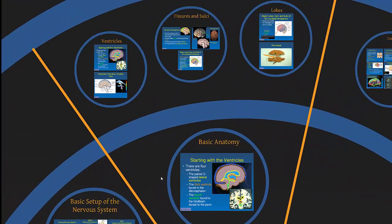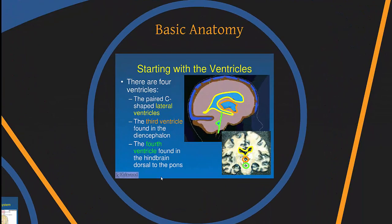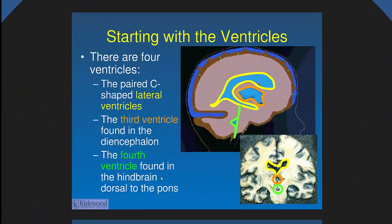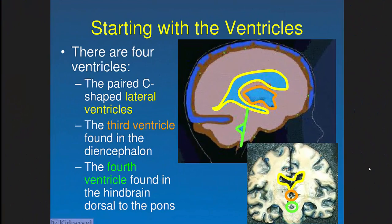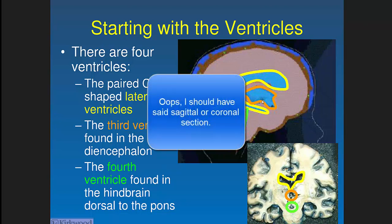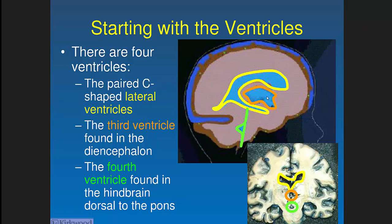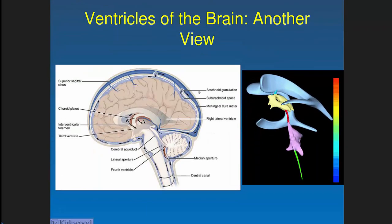Now for basic anatomy. The ventricles hold fluid because the brain floats within the cranium, providing a buffer against trauma. We have lateral ventricles up here, a third ventricle around the thalamus, and a fourth ventricle that dives into the cerebellum and passes fluid down into the spinal cord. This figure also shows the circulation of CSF. Two things to note: the choroid plexus, a filter of capillaries that produces CSF, and the cerebral aqueduct connecting the third and fourth ventricles.